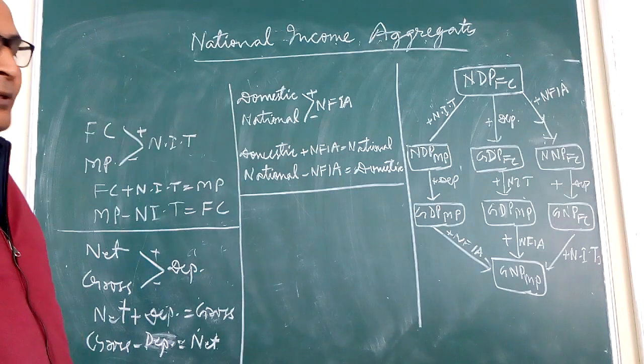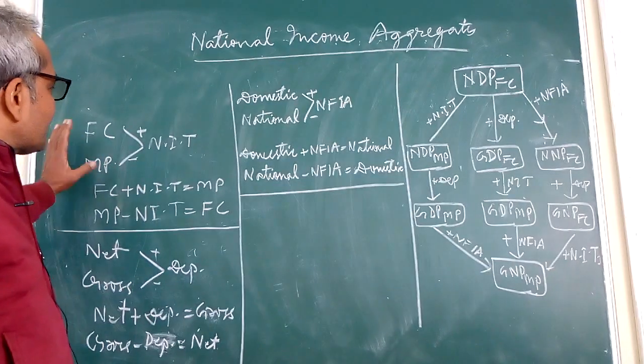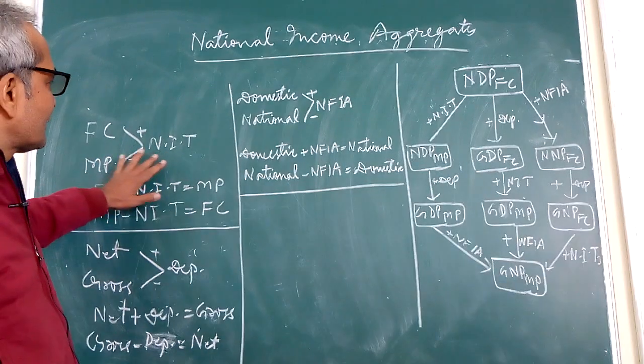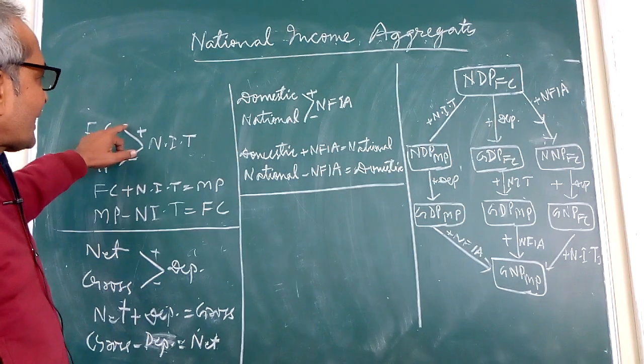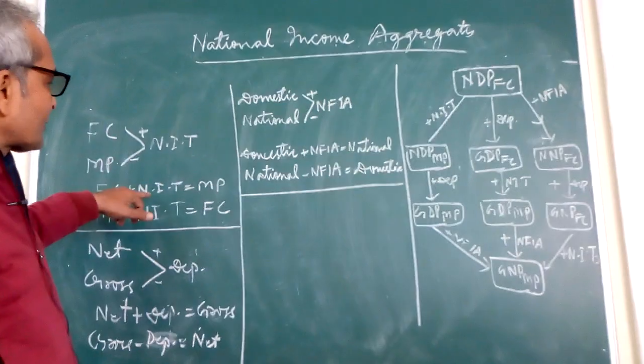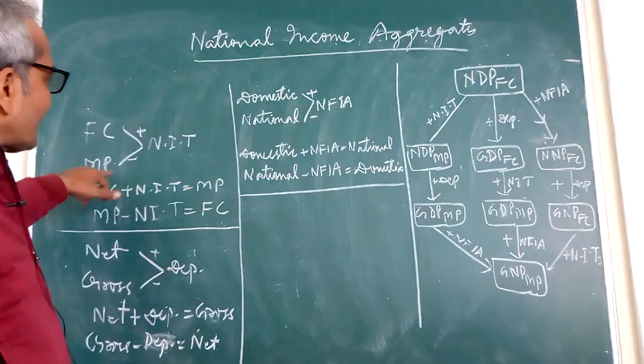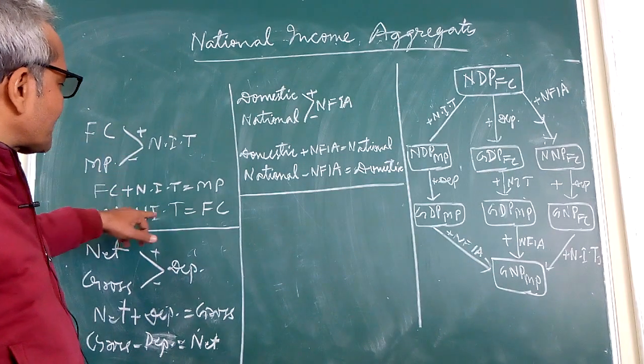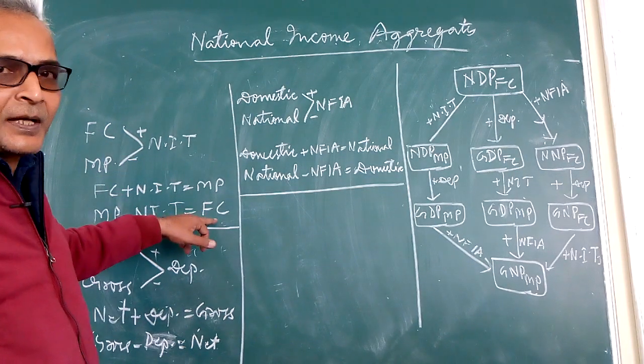For that we need to remember this factor cost and market price NIT. When we add up NIT in factor cost we get NDP and if we move from downwards, if we subtract NIT from NDP we get factor cost.